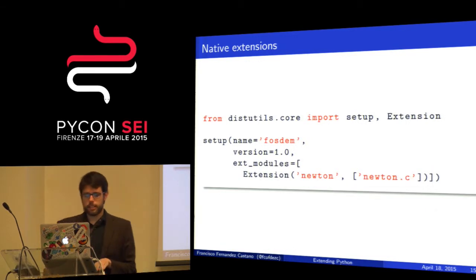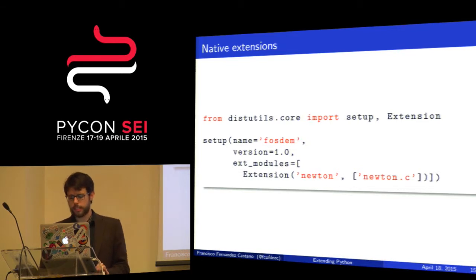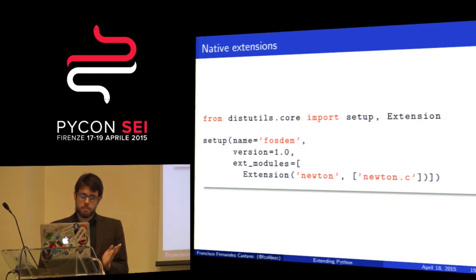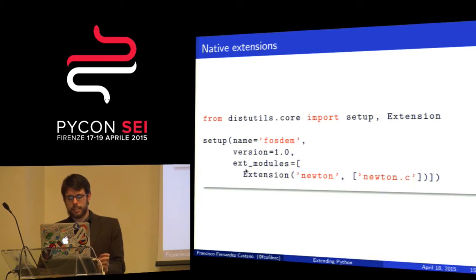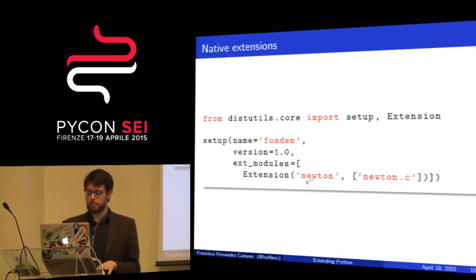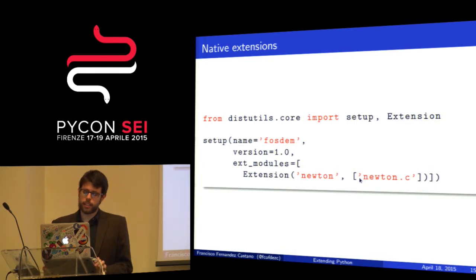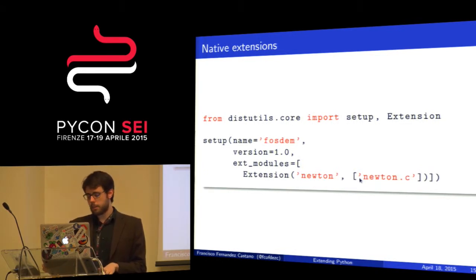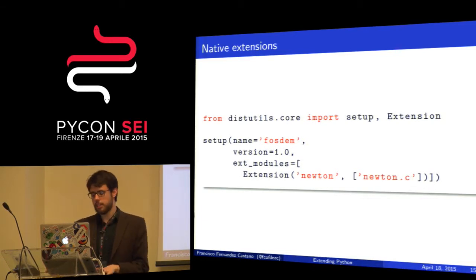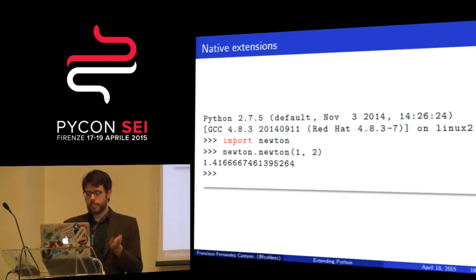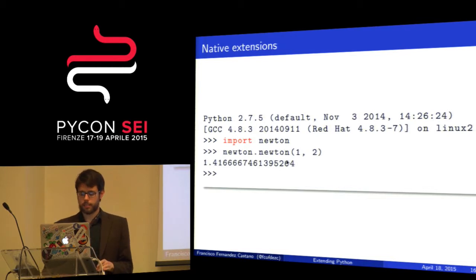How do I compile this? We are lucky — in the standard library we have some tools. In the distutils module we have setup() and the Extension class. What I'm telling it is: build an extension with this name and given these source files. I can also declare some compiler flags and so on. This is a very simple example so this will work. Once I run setup, I import my Newton module, call my Newton function, and it does the work.